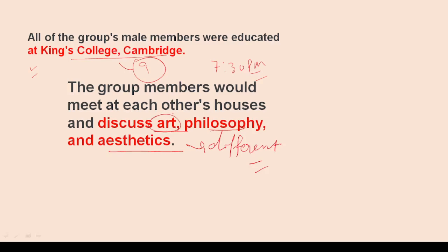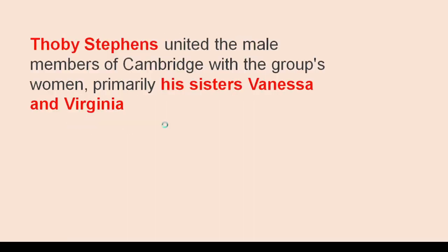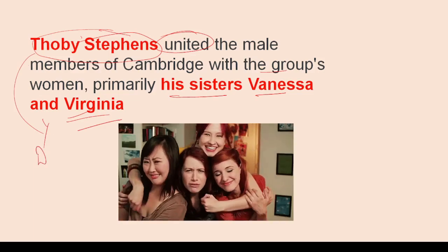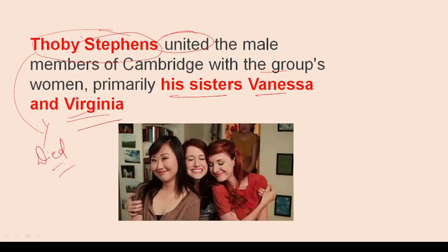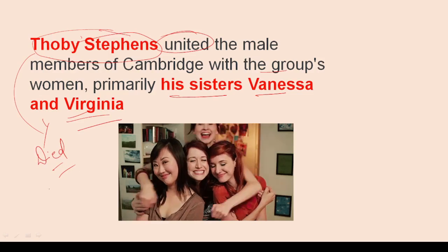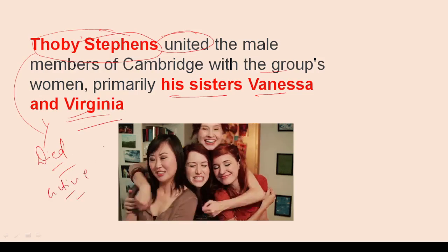Thoby Stephen is a very important name because he was the person who started this group, or we can say he united the male members of Cambridge with the women of the group — primarily his sisters Vanessa and Virginia. He was a very important person, and after his death the group became more active and came closer together.